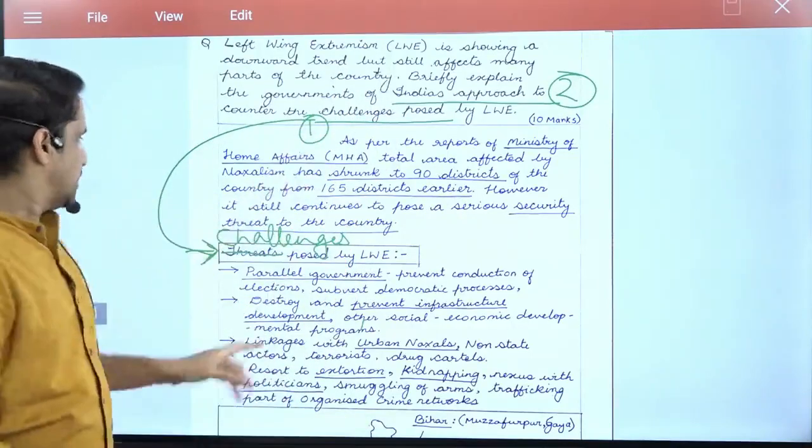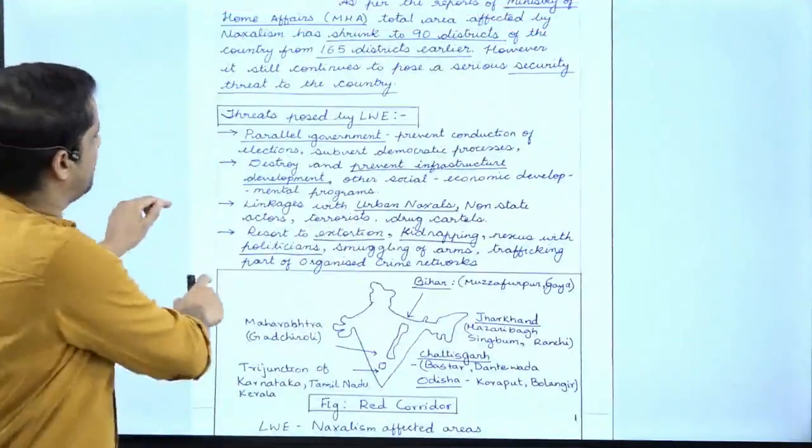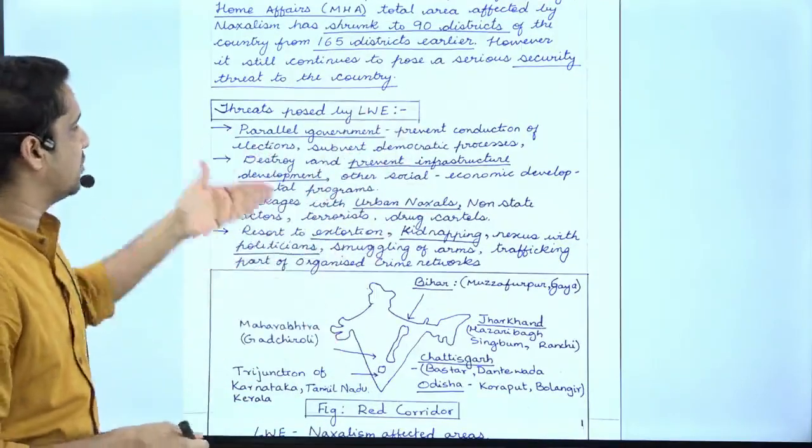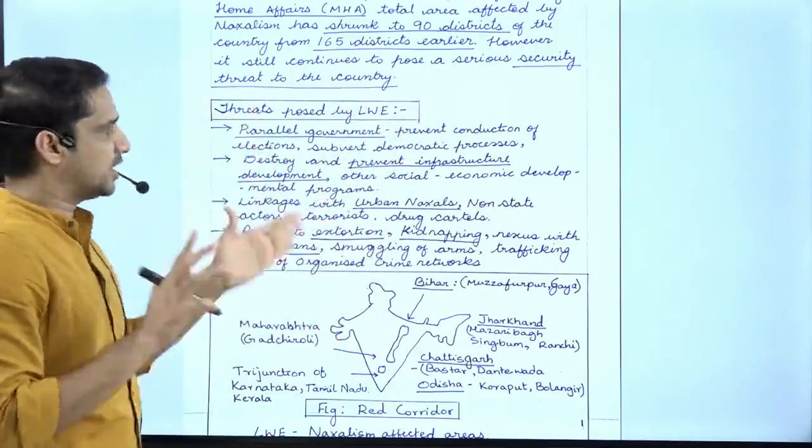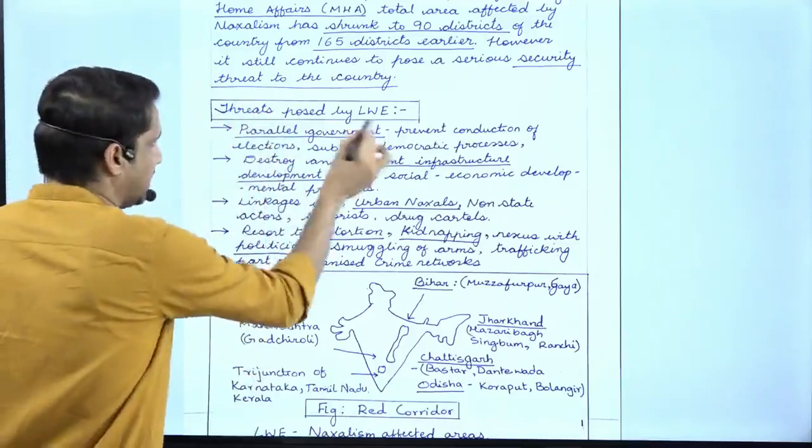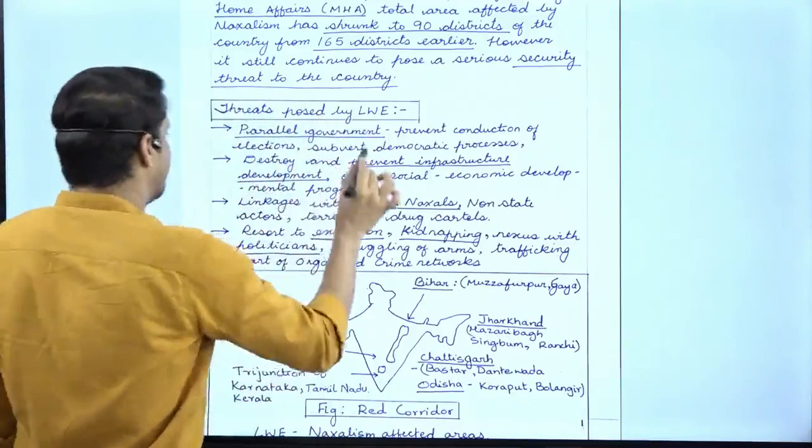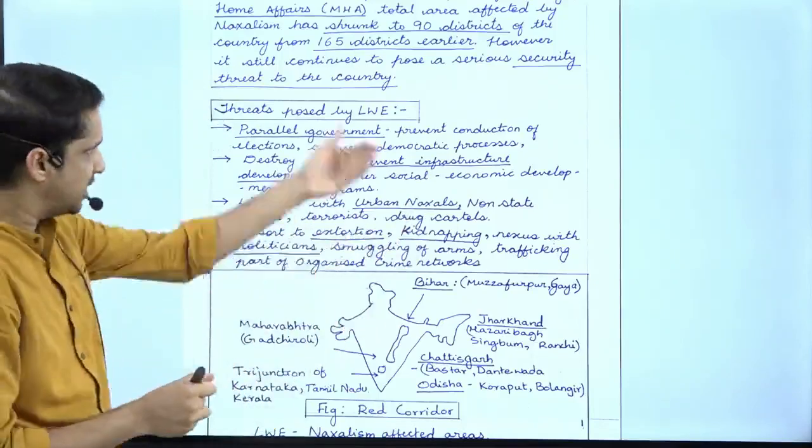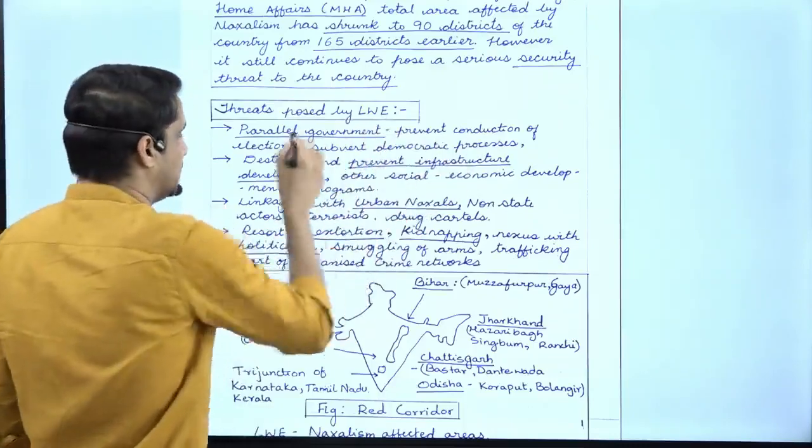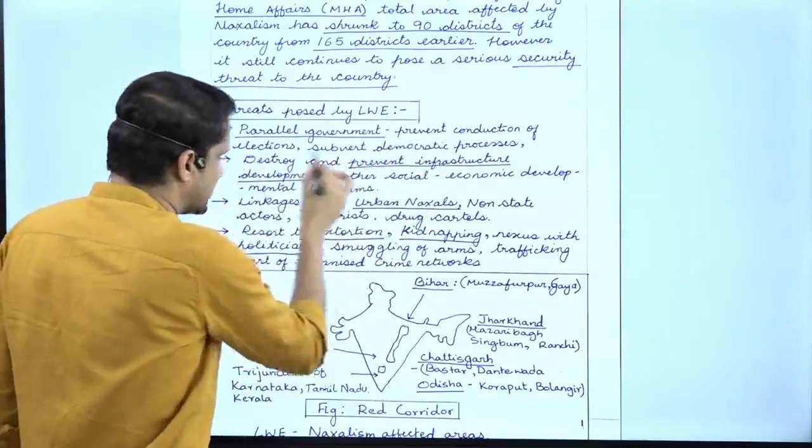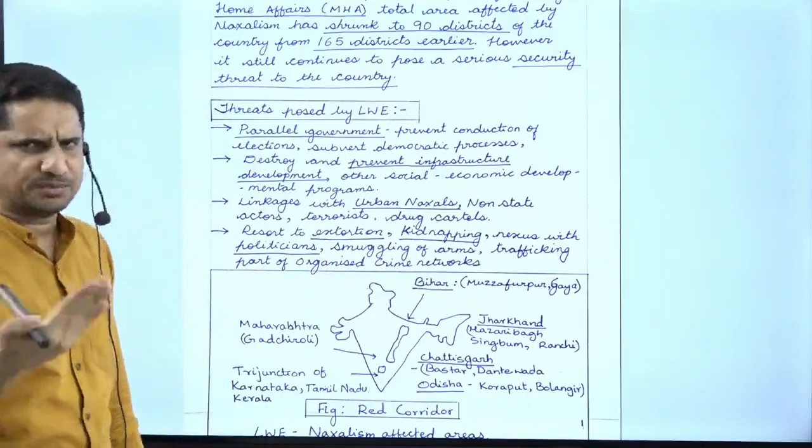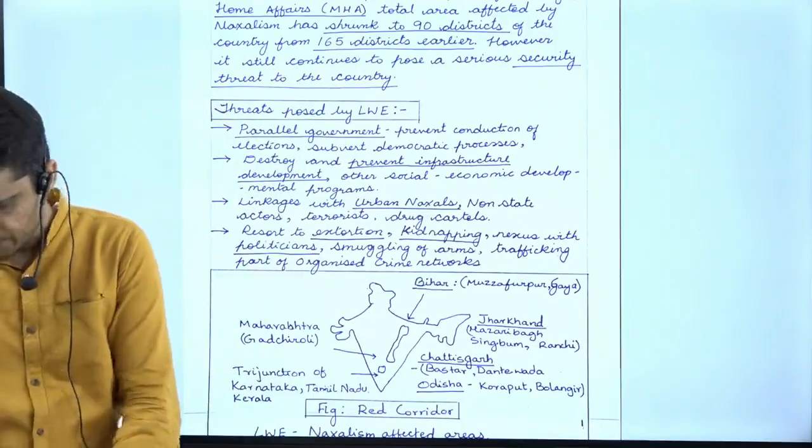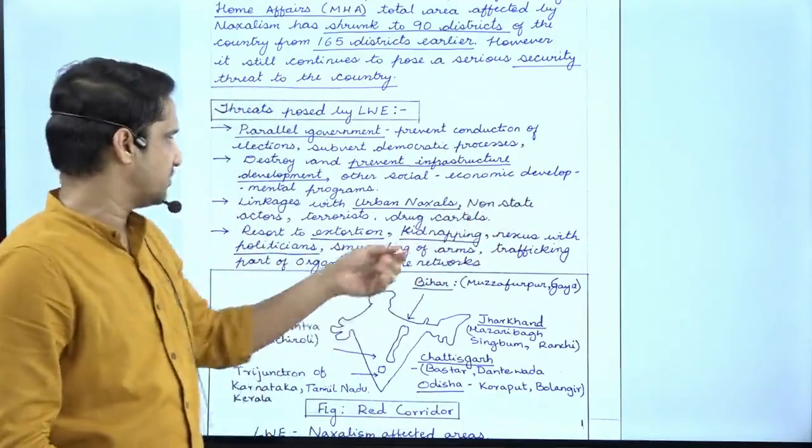The rest of the answer is really good. Challenges posed by LWE include: parallel government which prevents the conduction of elections and democratic process, destroys and prevents infrastructure development. After the subheading, there are two ways to write the answer. First, you can give subheadings like parallel government, prevent infrastructure development, urban Naxalism, extortion and kidnapping. The second way is what she wrote - parallel government, and then rather than giving a subheading, she started writing and underlined the key terms.